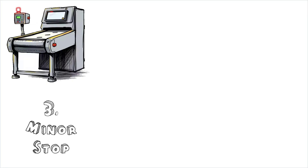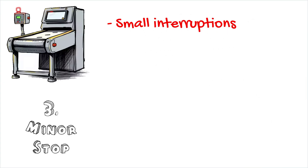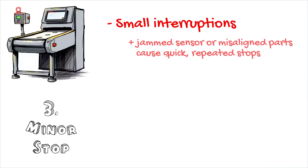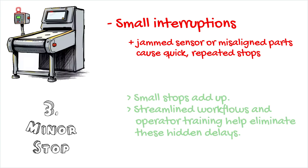Another critical loss is idling and minor stoppages. Small interruptions, like a jammed sensor or misaligned part, cause quick, repeated stops. These are the pauses and minor delays that may occur during a shift, possibly due to operators taking short but frequent breaks or brief machine stops. Addressing these requires creating a streamlined workflow and proper operator training.